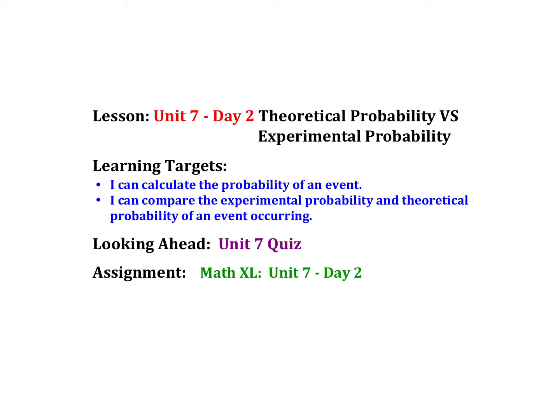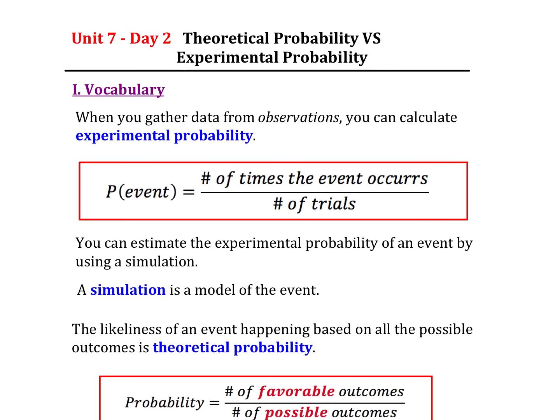Probability is the likeliness that something will occur. Let's get into experimental probability first. Experimental probability is what happens when we actually run an experiment.